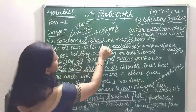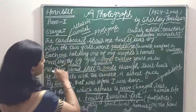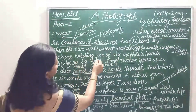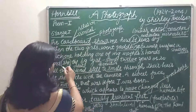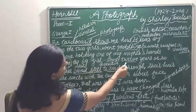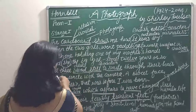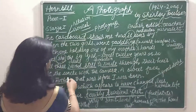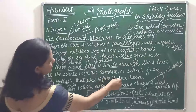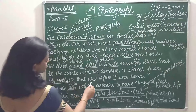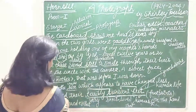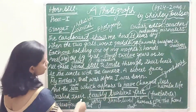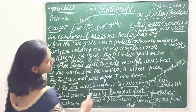Now let's read the poem line by line. 'The cardboard shows me how it was when the two girls went paddling, each one holding one of my mother's hands, and she, the big girl, some twelve years or so. All three stood still to smile through their hair and the uncle with the camera. A sweet face, my mother's, that was before I was born, and the sea which appears to have changed last was their terribly transient feet.'